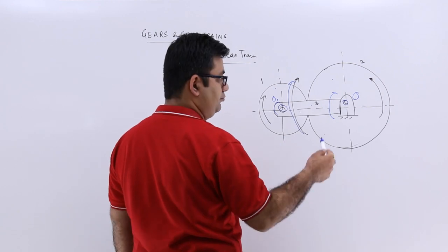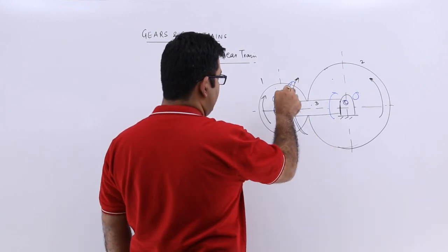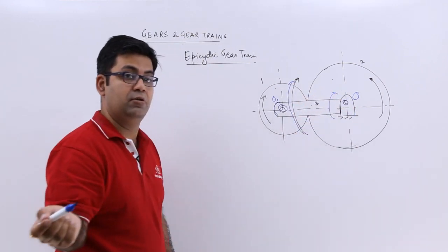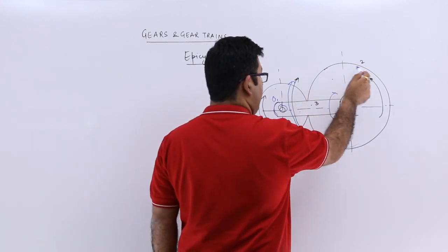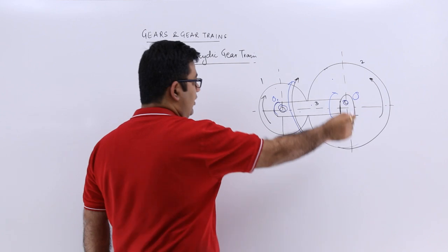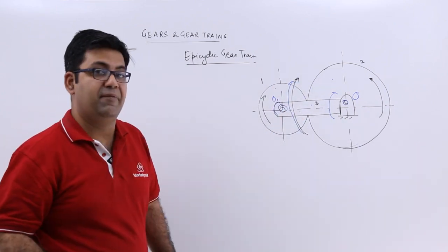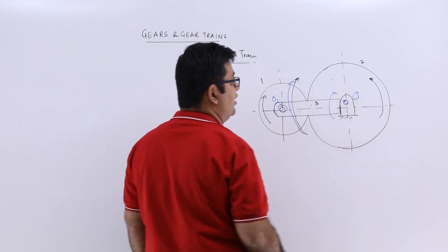Maybe we can fix - Can we fix gear 1? No, we cannot fix gear 1 because when you try to fix gear 1, your gear 2 will start to move around gear 1 and that cannot happen because gear 2 is a fixed gear.